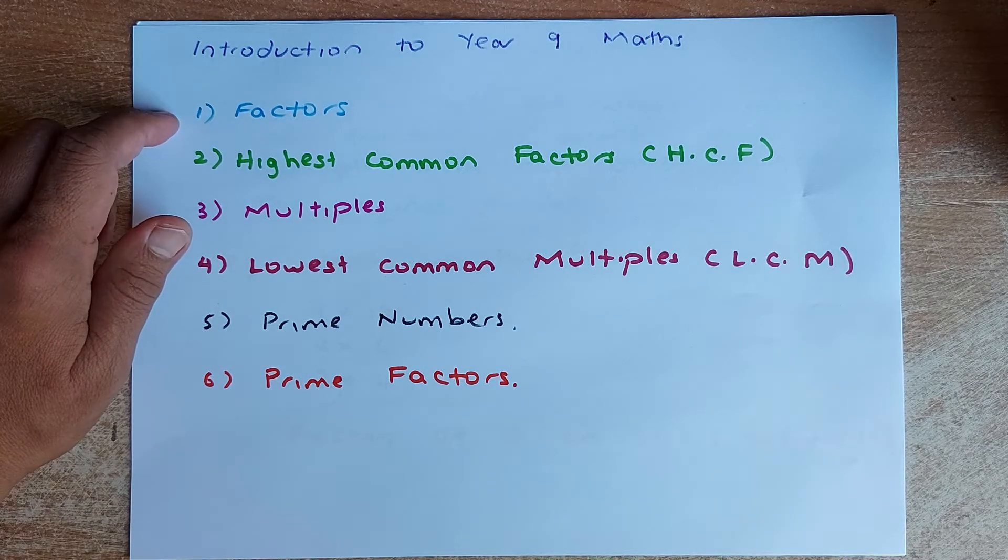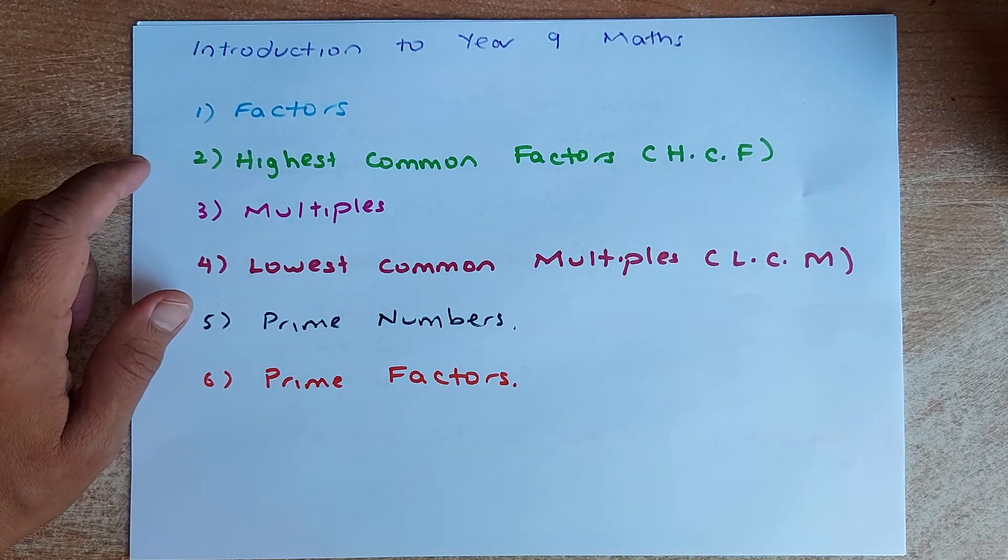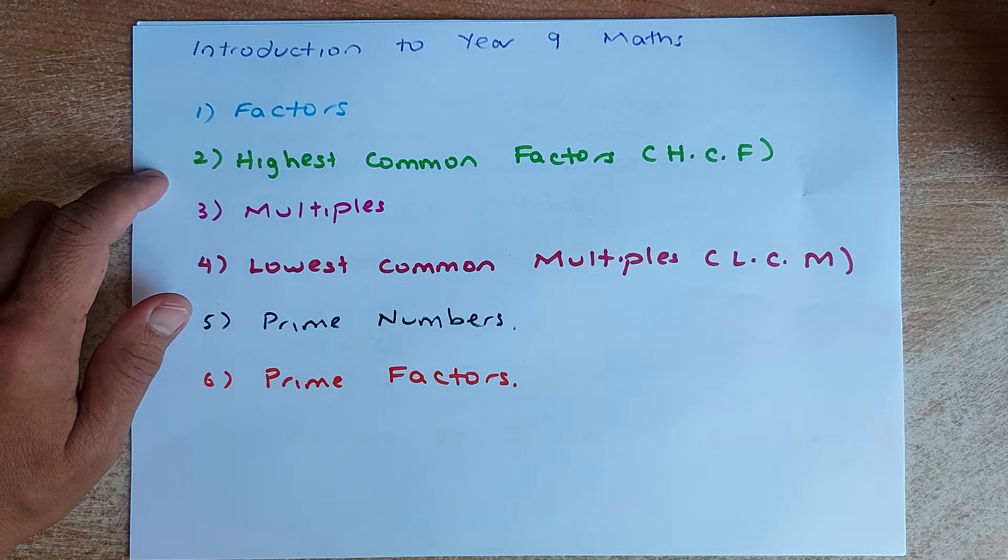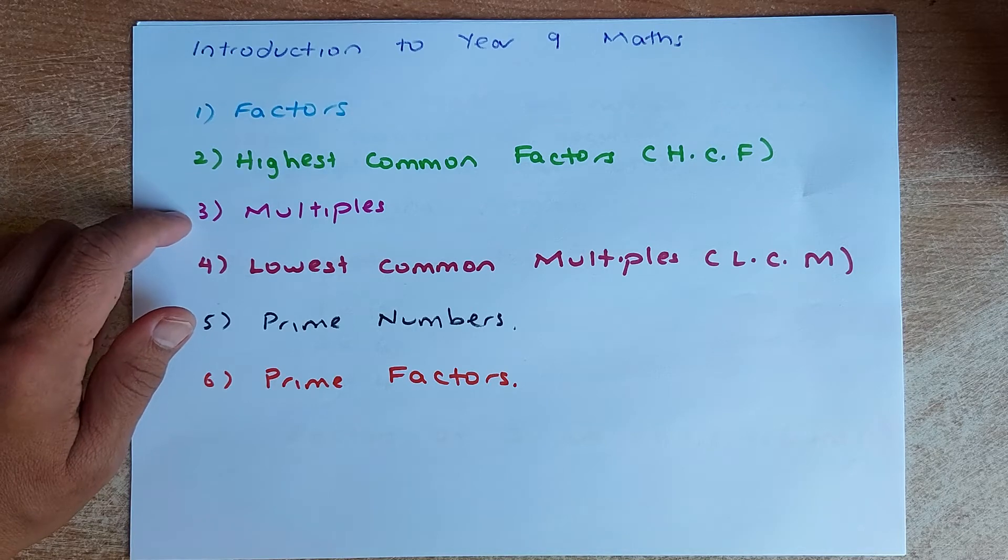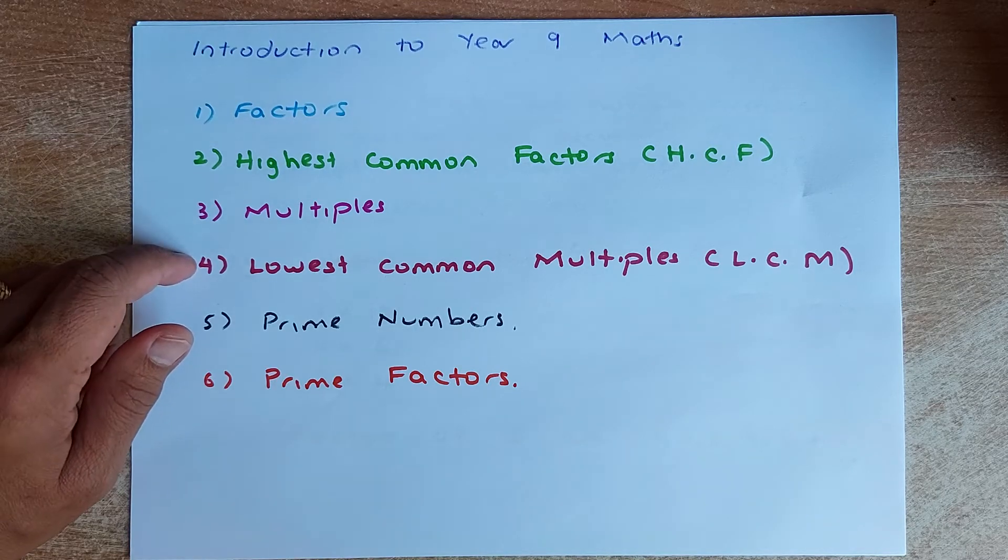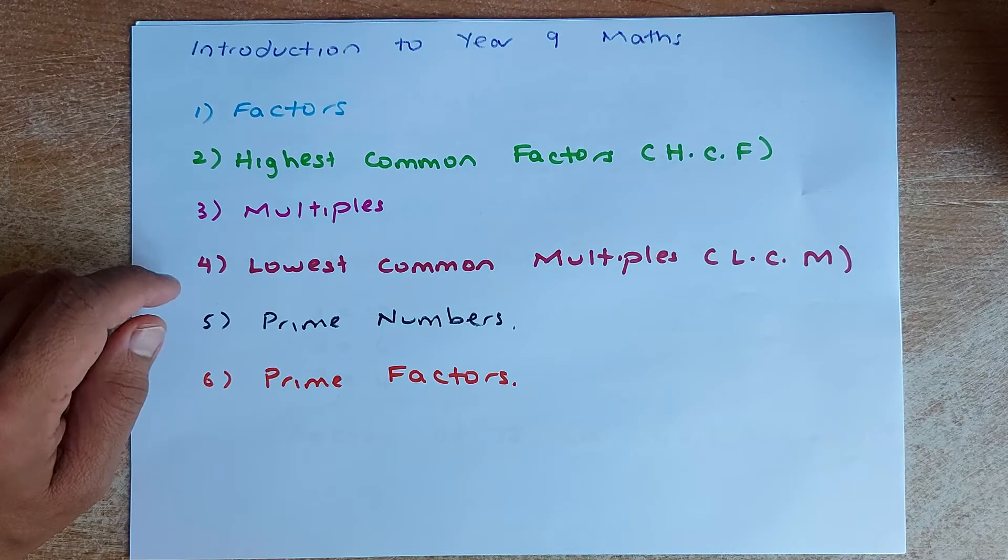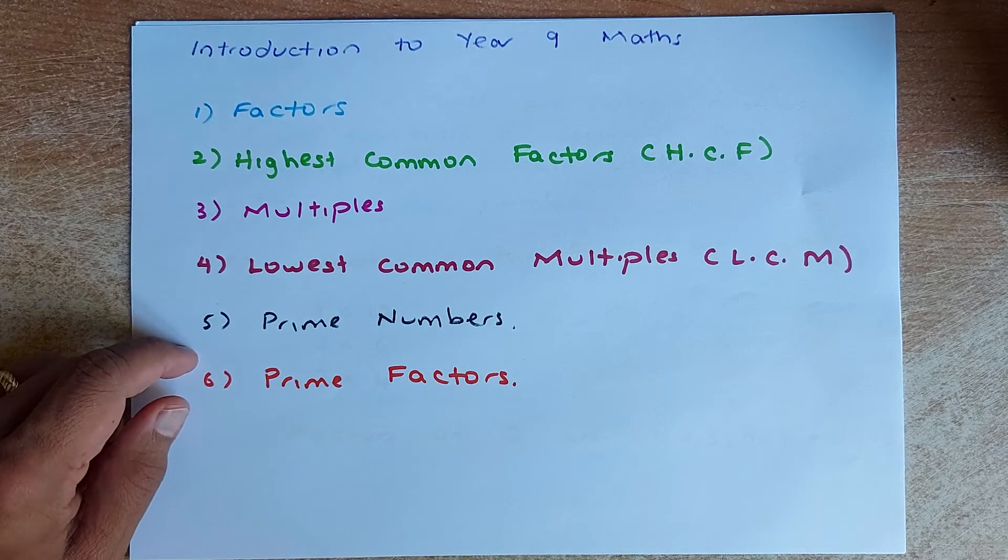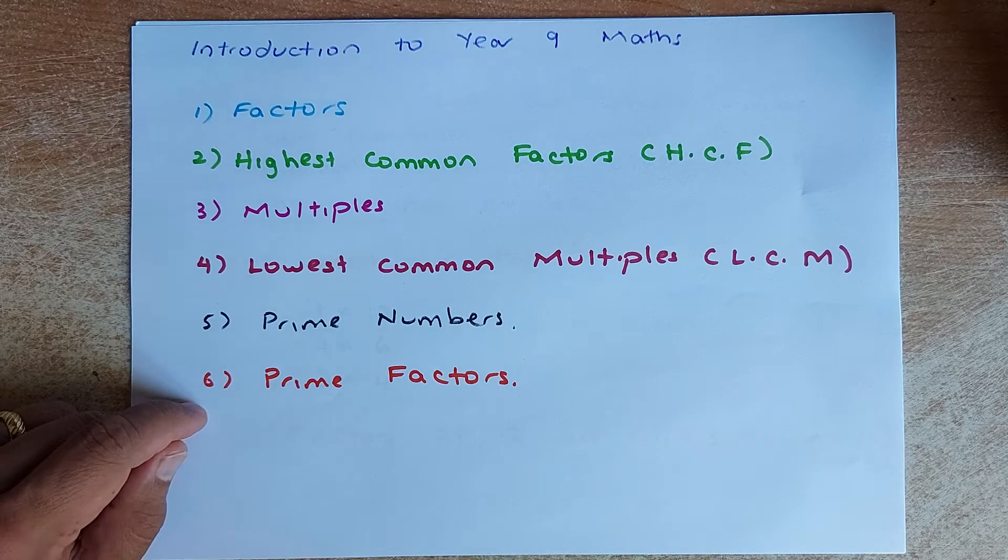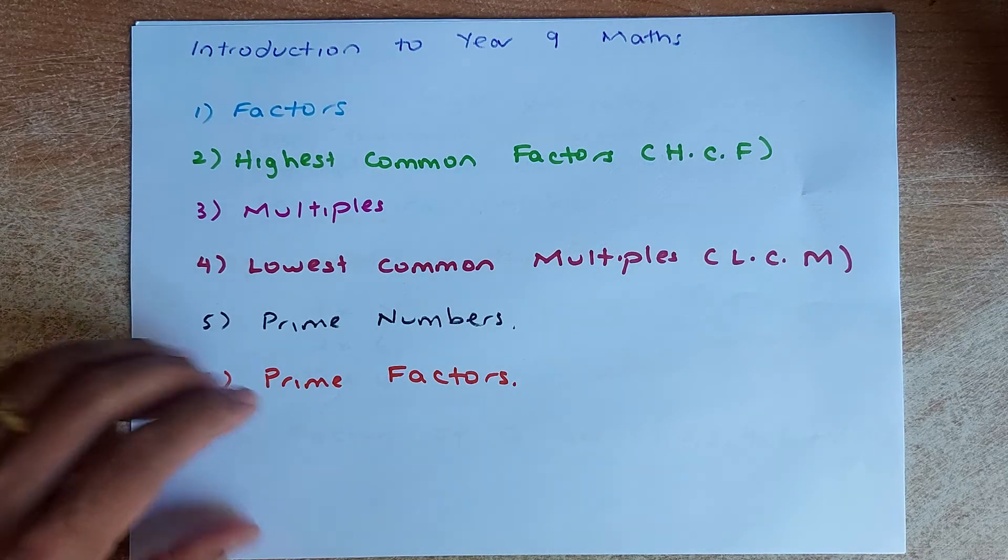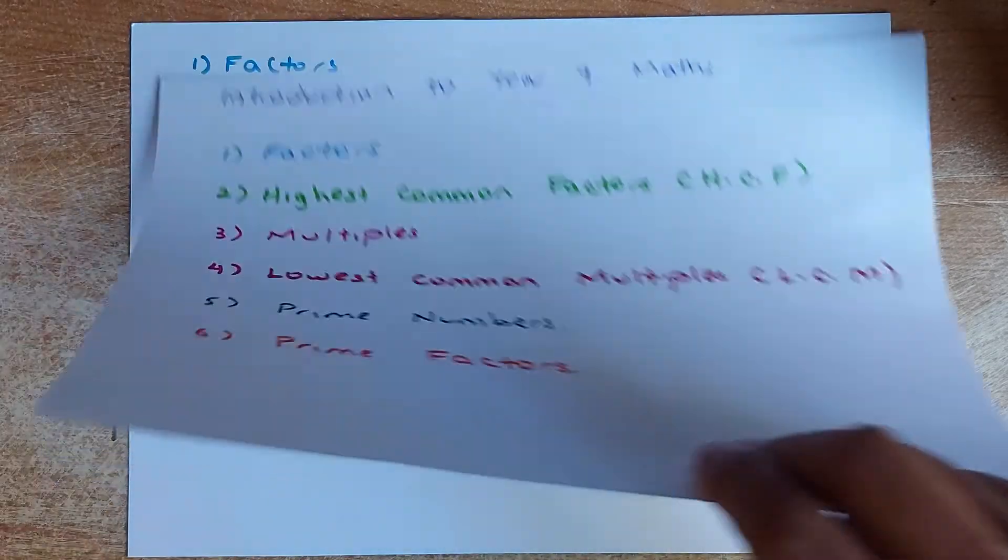So these are the six common topics that you will learn on the first day of school. The first one is factors. When you know the factors, you are going to find what is the highest common factor. Then you need to know what's the multiples. Once you know your multiples, you need to know what is the lowest common multiple, also called LCM. And then we need to know what's the prime number, and last but not least we are going to find out what are prime factors.